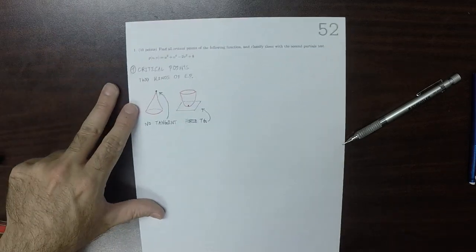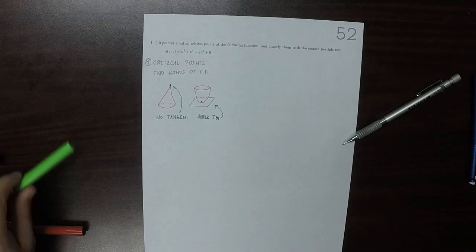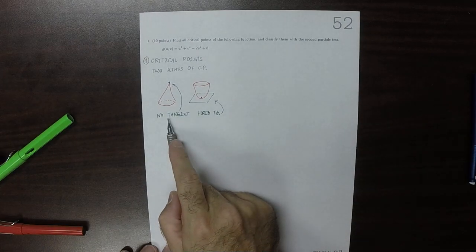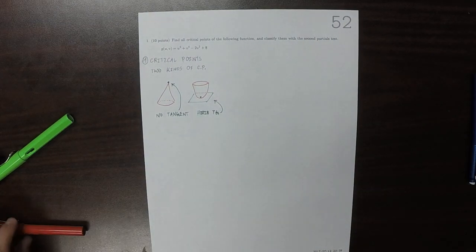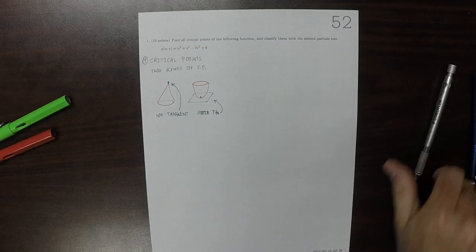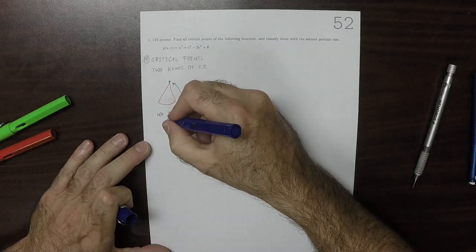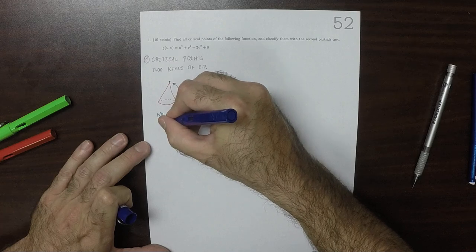So critical points have to do with tangency, and the two kinds are no tangency or horizontal tangency. And for this kind, this means, analytically,